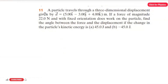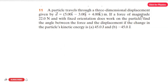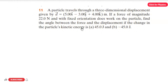Problem number 11: a particle travels through a three-dimensional displacement given by d vector equal to 5 meter i-cap minus 3 meter j-cap plus 4 meter k-cap. A force of magnitude 22 newton with fixed orientation does work on the particle. Find the angle between the force and the displacement if the change in kinetic energy is 45 joules and minus 45 joules.